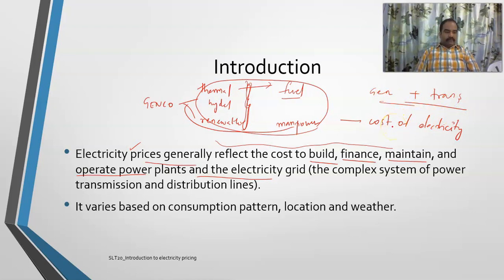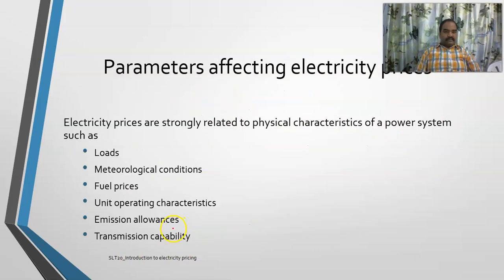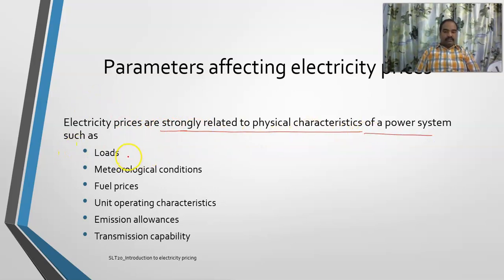The ultimate price of electricity that the consumer pays is a reflection of all these components — generation and transmission. This price of electricity varies depending upon the consumption pattern, the location, and also the weather. Electricity prices are strongly related to the physical characteristics of the power system. One key parameter is load — if load is high, then automatically the price also goes up because demand is high.